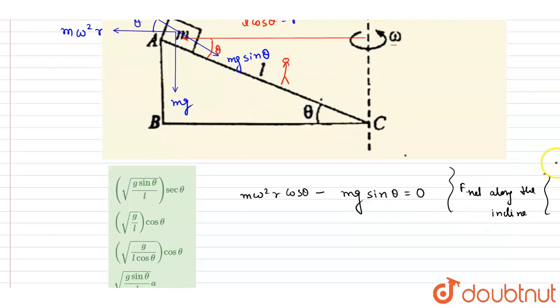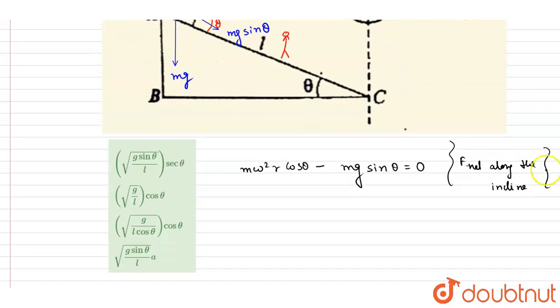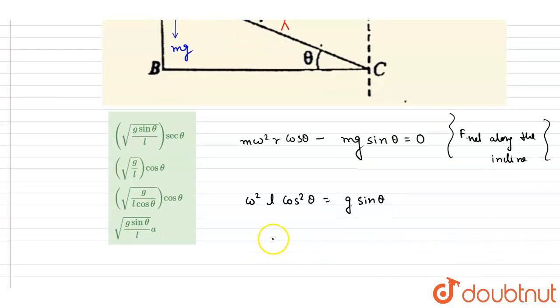Now if you see, we already calculated the r, r is l cos theta, and m here will get cancelled out. So you will write down omega square l cos square theta equals g sin theta. So from here if you see...